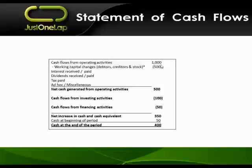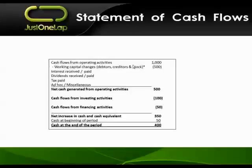Cash from operating activities is really how much of your sales return into cash — that's where you get your working capital part, which strips out the amount that becomes debtors and your reinvestment in stock, and potentially the build-up in creditors. Creditors are part-financing your business. As far as possible, if you can get your debtors to pay early, pay your creditors late, and hold minimal stock, then your working capital change will be as small as possible and your cash generated from operations will be as high as possible.